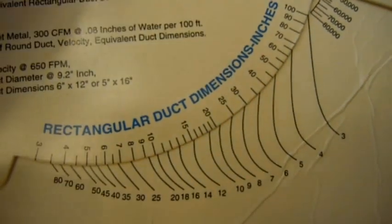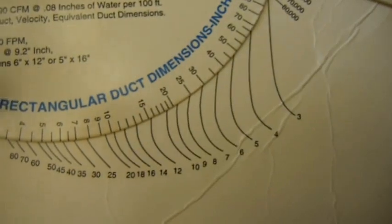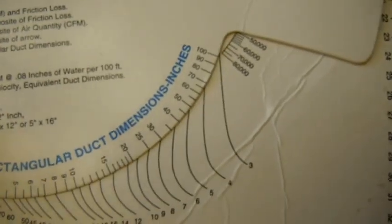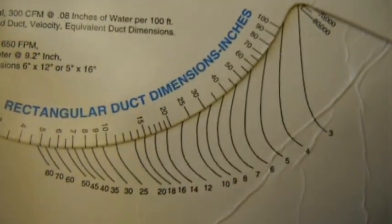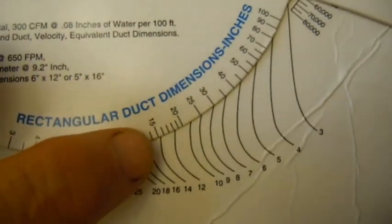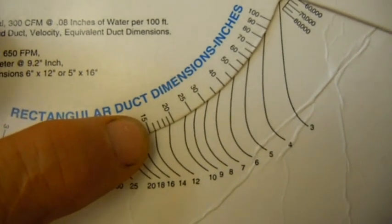So now let's find out what the equivalent is if we have a 16 by 16 inch duct. To do that, we turn this dial right here. See right here, that's 15. One more is 16. So let's find the 16 inch mark.